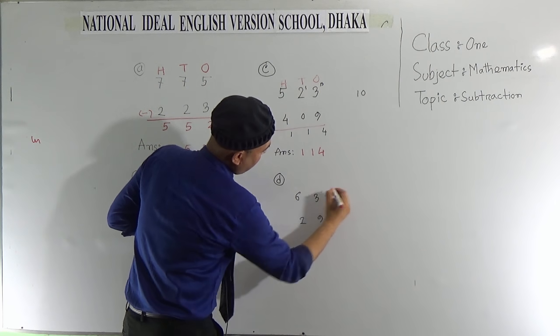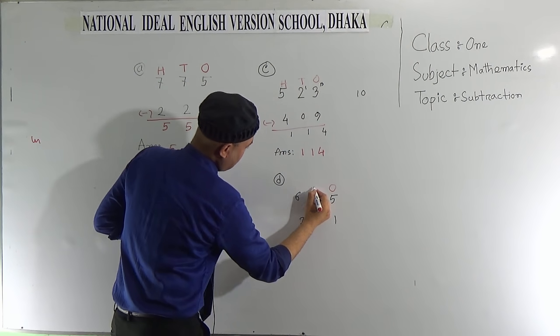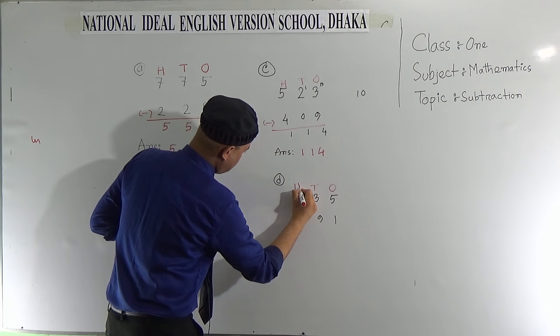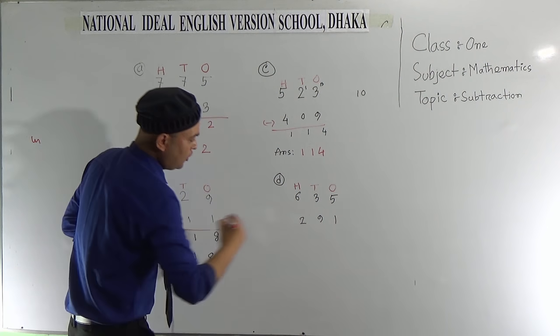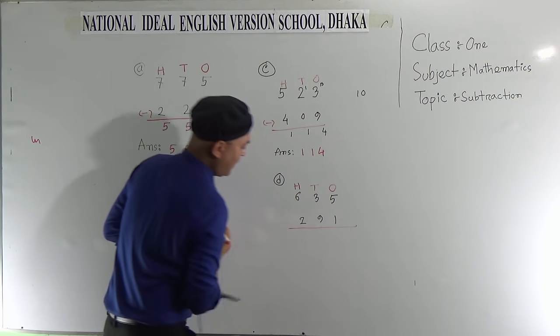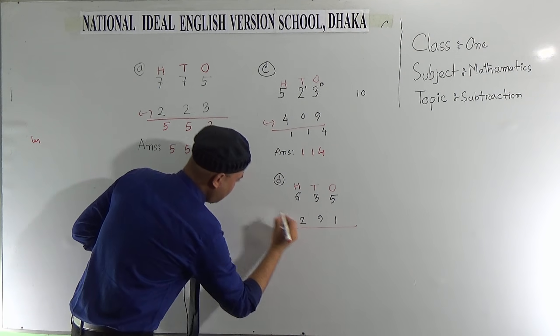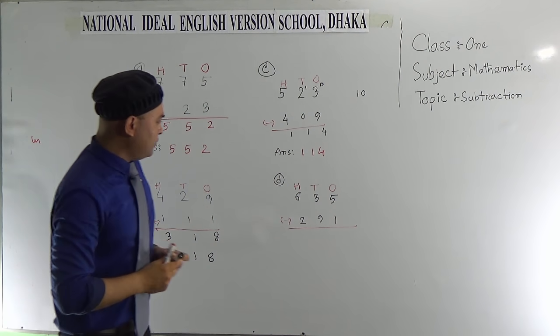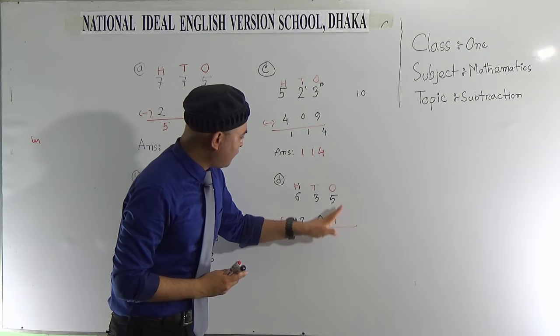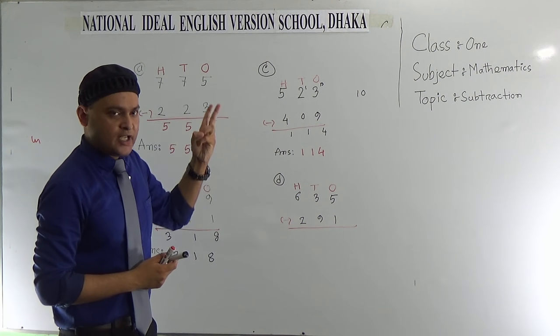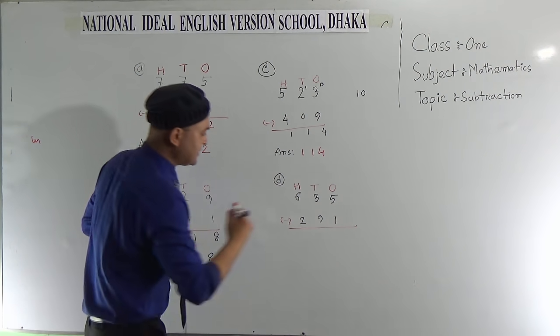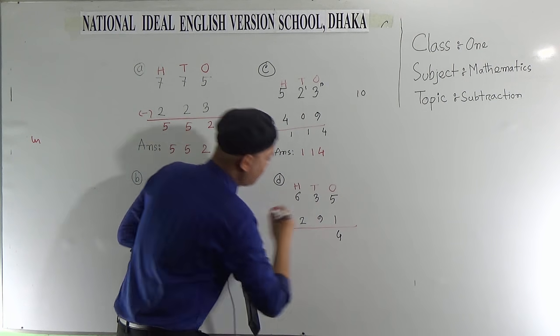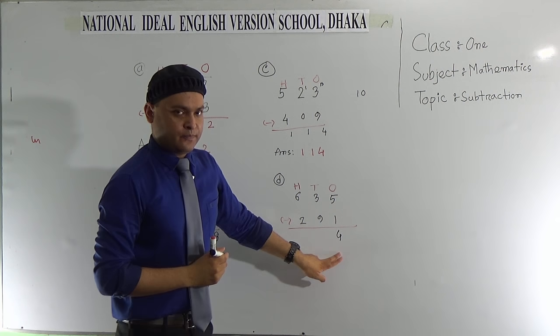So let's do the next problem, 635 and 291. First of all we put the place value. 5 is 1's, this is 10's, and this is 100's. So again similarly draw a line and take the minus sign. Now subtract 1 from 5, it will be 4, and this 4 will go in the 1's column.